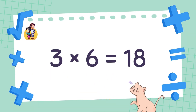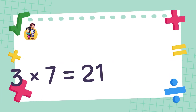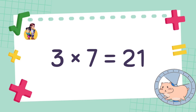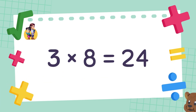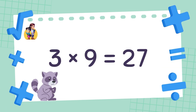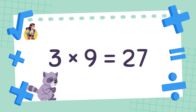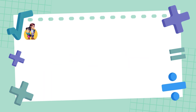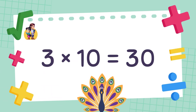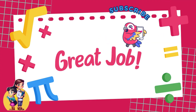3 times 6 is equal to 18. 3 times 7 is equal to 21. 3 times 8 is equal to 24. 3 times 9 is equal to 27. 3 times 10 is equal to 30. Great job!